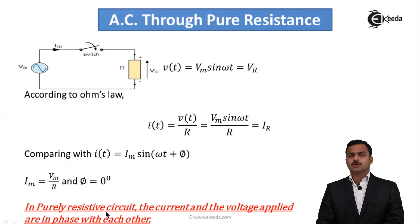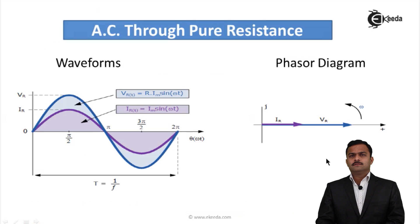Now let's see the waveforms. It's very easy. This is Vm sin(ωt) starting from 0, and the phase angle φ for current also is 0, so current will also be starting from 0 and it is given by Im sin(ωt). If I see properly, both the waveforms start at the same instant, that is 0, and one cycle of both the waveforms completes at 2π.